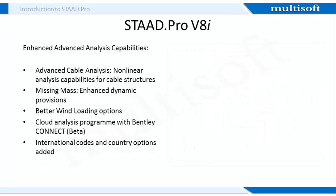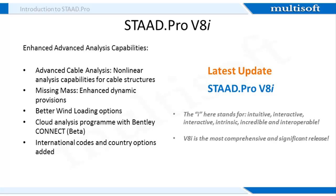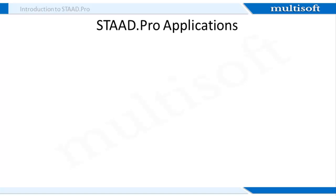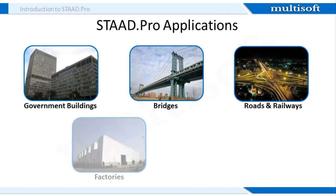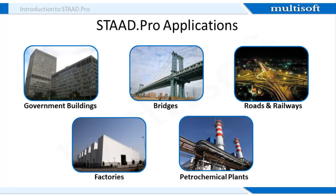The latest version of STAD Pro is V8i, which is the most comprehensive release so far. STAD Pro has been used by organizations all over the globe to create virtual designs of government buildings, bridges, roads and railways, factories, petrochemical plants, communication networks, power generation units, and many more high-end structures. As this software finds use in almost every domain, it is used by structural engineering firms, multidisciplinary engineering and architecture firms, construction companies, and government agencies.